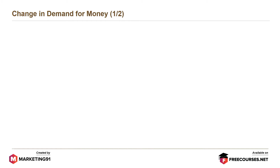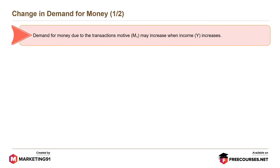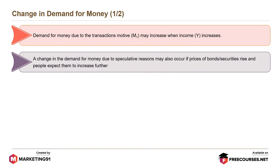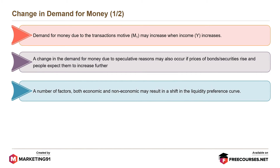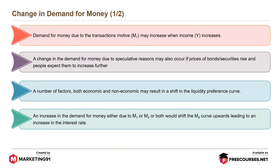Now let's understand the impact of change in demand for money on the rate of interest. Demand for money due to the transactionary motive, or M1, may increase when income (Y) increases. A change in the demand for money due to speculative reasons may also occur if prices of bonds or securities rise and people expect them to increase further. A number of factors, both economic and non-economic, may result in a shift in the liquidity preference curve. An increase in the demand for money, either due to M1 or M2, or both, would shift the MD curve upwards, leading to an increase in the interest rate.